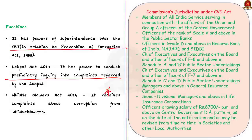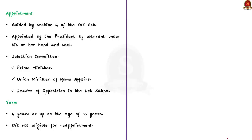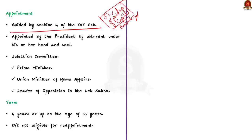In 2013, Parliament enacted the Lokpal and Lokayukta Act 2013, which amended the CVC Act 2003, empowering the Commission to conduct preliminary inquiry and further investigation into complaints referred by the Lokpal. As per the Whistleblowers Act 2014, the CVC can also receive complaints about corruption from whistleblowers. Regarding jurisdiction, the CVC covers various central government categories, and any company where the central government holds at least 51% of paid-up share capital. The CVC does not deal with matters pertaining to state governments.